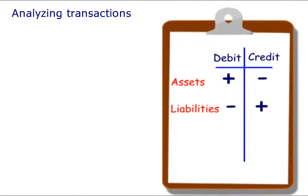Analyzing Transactions. In the last lesson you learned that assets increase on the debit side and decrease on the credit side, and liabilities decrease on the debit and increase on the credit.